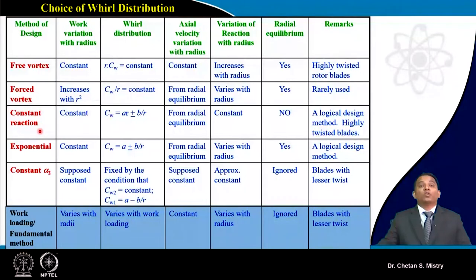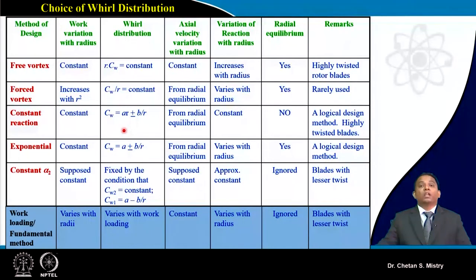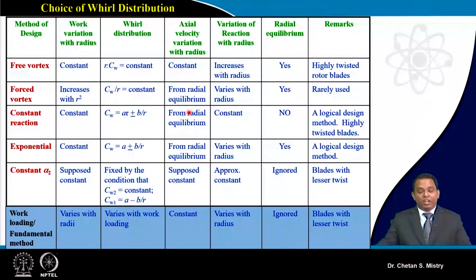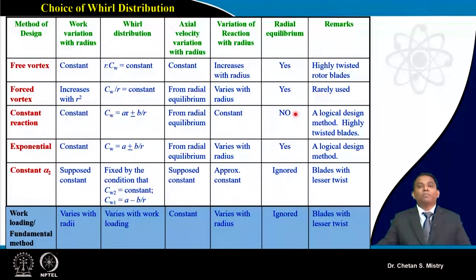Then we discussed the constant reaction design. Work variation along the radius is constant. The whirl distribution is chosen arbitrarily with Cw1 and Cw2 varying in the form of (ar ± b/r). Axial velocity is calculated from the radial equilibrium equation. The degree of reaction is constant throughout the span. However, a limitation of this method is that it does not satisfy radial equilibrium, though it is a more logical design for special compressors.